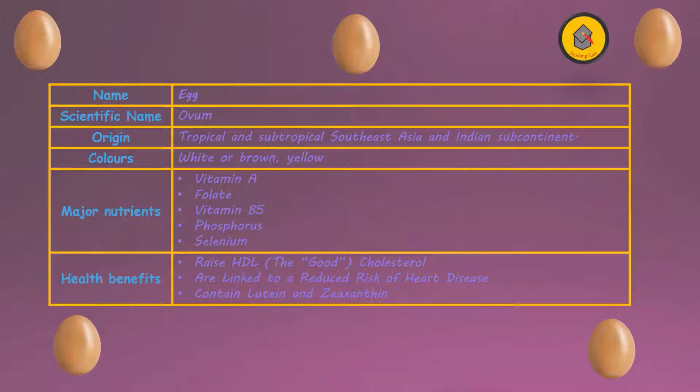The major nutrients it supplies are vitamin A, folate, vitamin B5, phosphorus, and selenium. The health benefits it has are: it raises the HDL, the good kind of cholesterol, it is linked to the reduction of the risk of heart diseases, and it contains lutein and zeaxanthin, some of the needed enzymes for the body.